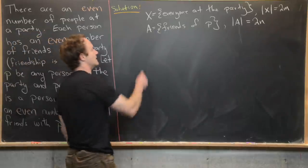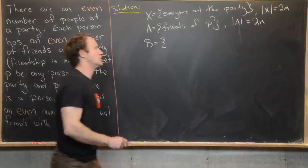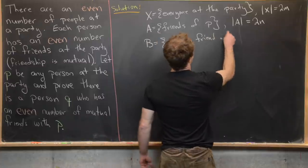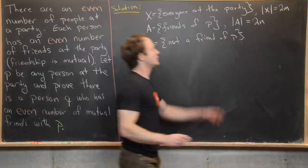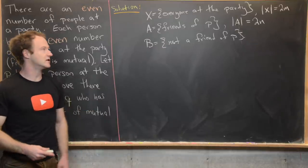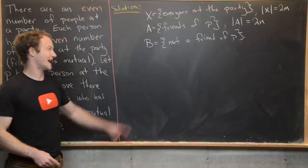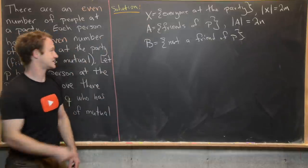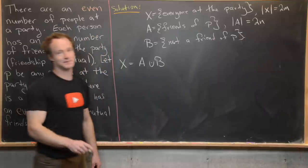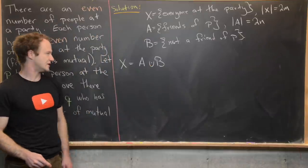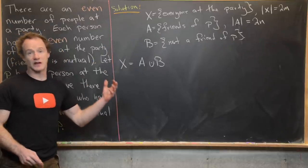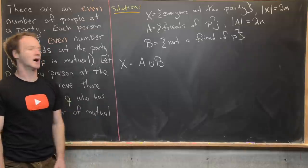Then we'll set B to be everyone who is not a friend of P. We don't know the parity of that just yet, but that's the first thing we'll show. Notice that we can decompose X as the disjoint union of A and B, since you cannot simultaneously be a friend of P and not a friend of P.